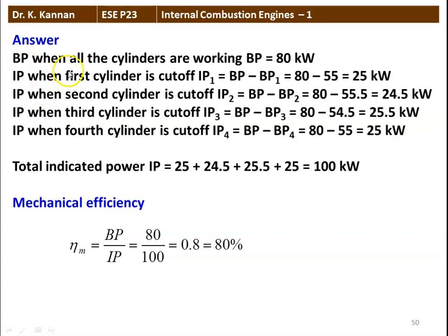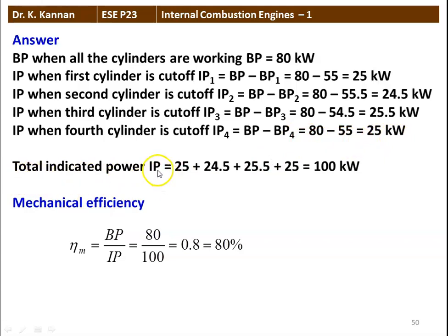Brake power when all cylinders are working: BP equal to 80 kilowatt. IP when the first cylinder is cut off: IP1 equal to BP minus BP1, so 80 minus 55 equal to 25 kilowatt. IP when the second cylinder is cut off: IP2 equal to 80 minus 55.5 equal to 24.5 kilowatt. IP when the third cylinder is cut off: IP3 equal to 80 minus 54.5 equal to 25.5 kilowatt. IP when the fourth cylinder is cut off: IP4 equal to 80 minus 55 equal to 25 kilowatt. Total indicator power IP equal to IP1 plus IP2 plus IP3 plus IP4 equal to 100 kilowatt. Mechanical efficiency eta M equal to brake power by indicator power: 80 divided by 100 equal to 0.8, which is 80%.